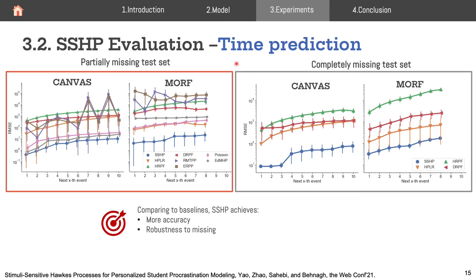For time prediction performance, comparing to all baseline approaches, our model (shown in blue) achieves lower RMSE in time prediction in almost all settings. Similar to the parameter estimation results, the consistently low RMSE in the completely missing test set compared to the partially missing test set further suggests the robustness of our model to missing data.